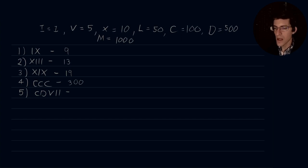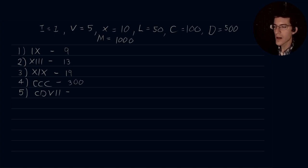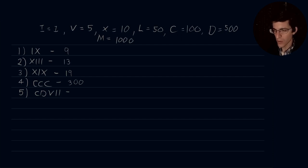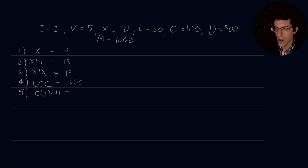Number five, CDVII: we start at the left-hand side and see 100, but then we have D, which is 500. So we subtract our C value from our D value. That gives us 400. Then VI: our I values are less than our V value, so we simply add — V plus II is 7. So this is 407.